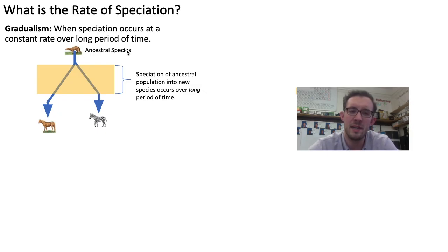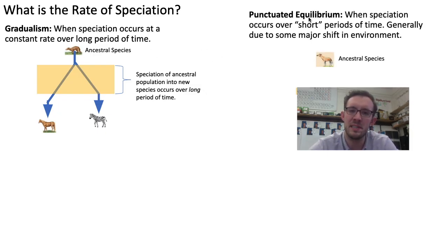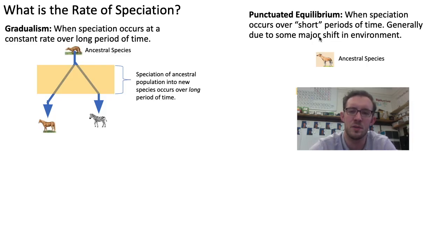Whereas the opposite form of speciation would be something called punctuated equilibrium, which is when speciation occurs over short periods of time, generally due to some sort of drastic change in the environment.